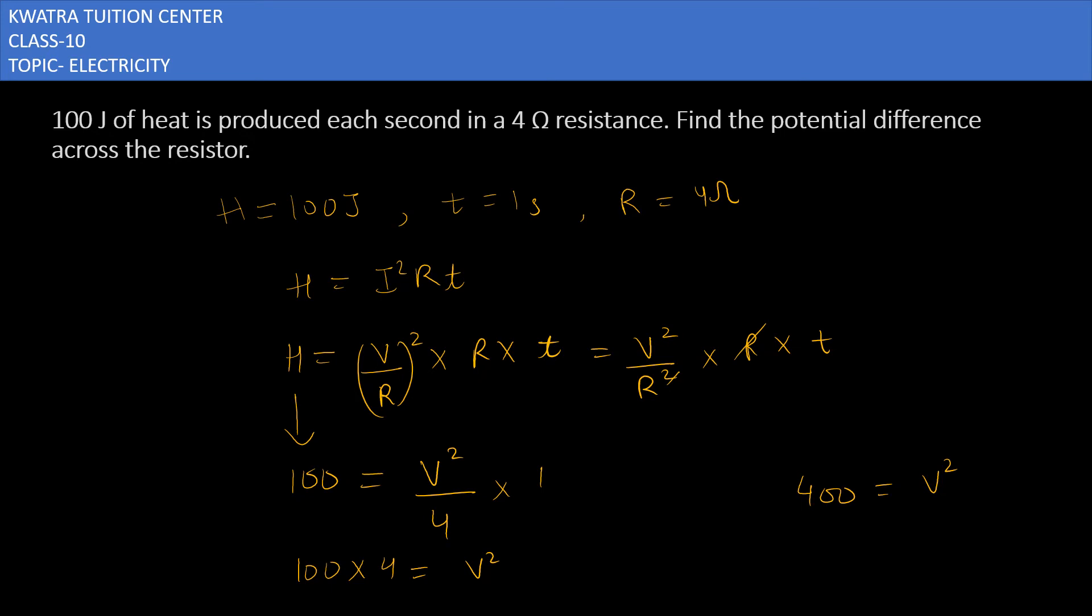V square ko aap left side le jao. It will give you root 400. Root 400 kya hoga? Aapka 20. Square aur root cancel ho jayega. It will give you 20 volt. V ki value hogi aapki 20 volt. Potential difference across the resistor will be 20 volt.